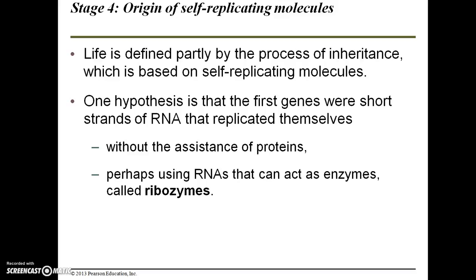Stage four in this four-stage hypothesis is the origin of self-replicating molecules. If you have simple cell-like units called pre-cells, but they can't incorporate self-replicating molecules, then how could life possibly arise? Life is defined partly by the process of inheritance, which is based on self-replicating molecules. One hypothesis is that the first genes were short strands of RNA that replicated themselves without the assistance of proteins, perhaps using RNAs that can act as enzymes called ribozymes.